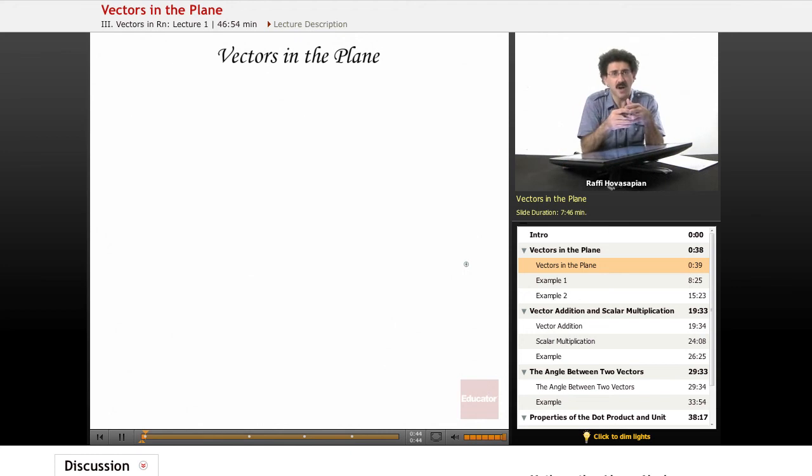In math and science, we talk about two types of quantities. One is a scalar, which is just a fancy word for a number, and the other is something called a vector.